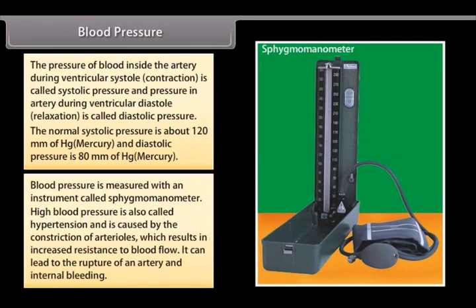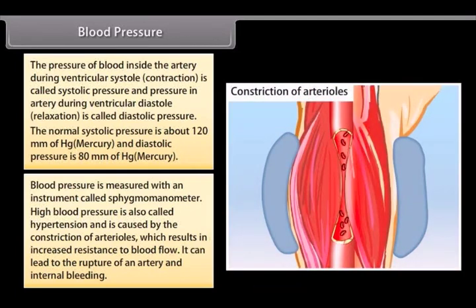High blood pressure is called hypertension and is caused by the constriction of arterioles which results in increased resistance to blood flow. It can lead to the rupture of an artery and internal bleeding.